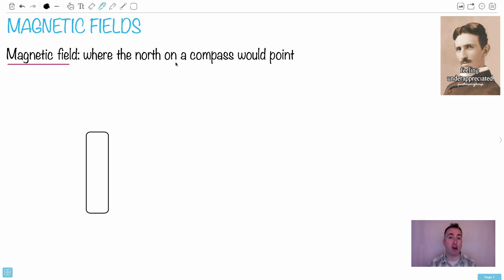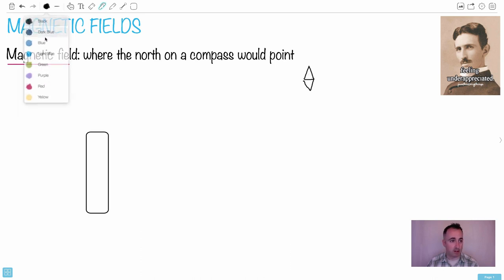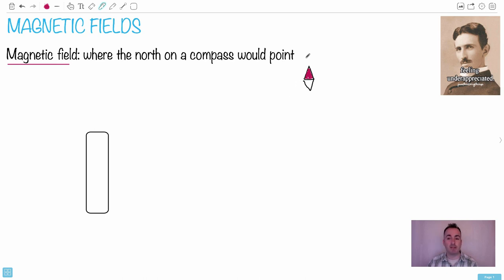We define magnetic field lines as the direction a north on a compass would point. A compass is a small thing that spins depending on the magnetic field and points somewhere. If you imagine a little compass — like in Google Maps, where it's usually drawn with the red end pointing north — in real life you might carry an actual compass in the woods. It's a little thing that's allowed to spin and rotate to tell you which way is north so you can navigate.